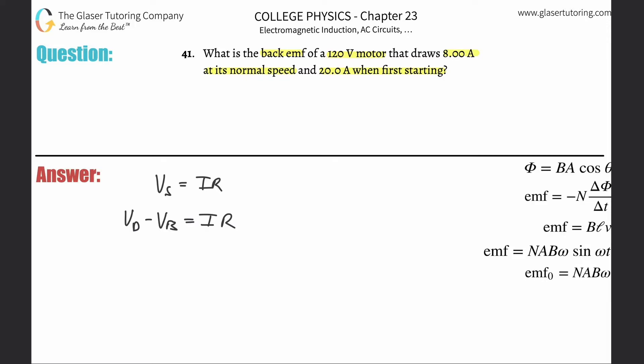So in this problem here, I want to find the back voltage. So I need to know the driving voltage, which is the 120. I need to know the current at normal operating speed, which I know, but I need to now know the resistance. And we don't know that.